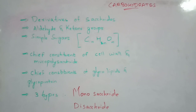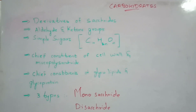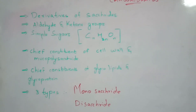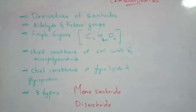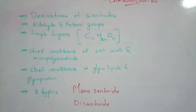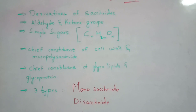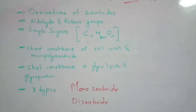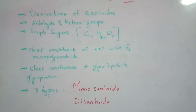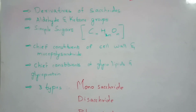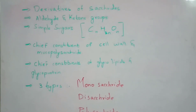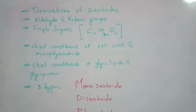Carbohydrates are also chief constituents of glycolipids and glycoproteins. Glycolipids are formed when glucose is present in the structure of lipids, and similarly for glycoproteins. Normally there are three types of saccharides, that is three types of carbohydrates: monosaccharide, disaccharide, and polysaccharide.